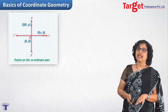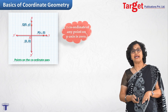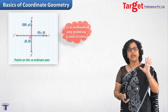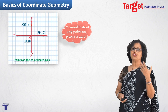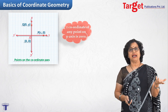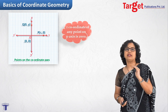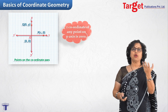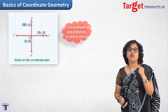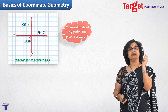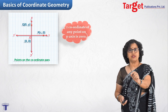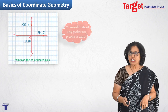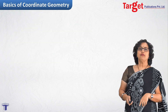So a point on the Y axis always has X coordinate 0. These three particular positions — the origin, a point on the X axis, and a point on the Y axis — will be used again and again. If a question says 'point on the X axis,' the immediate thought should be that its Y coordinate is 0.